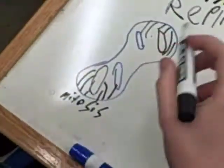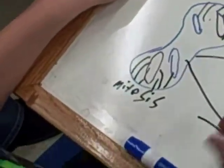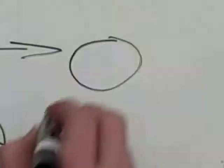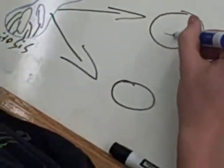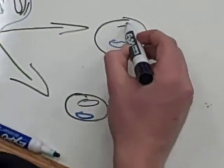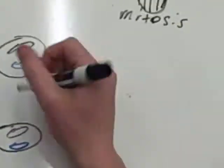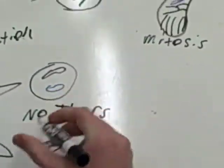This is called Mitosis. Next, it can split into two cells. And then the nucleus will come back.